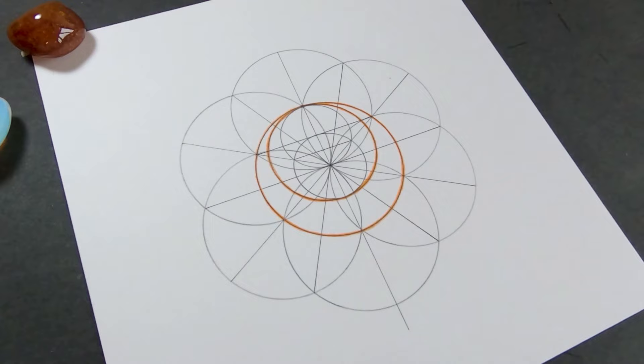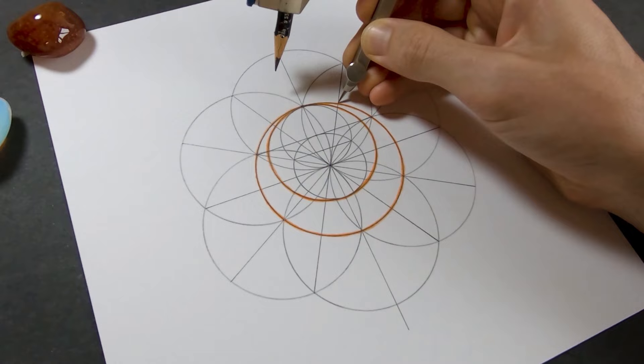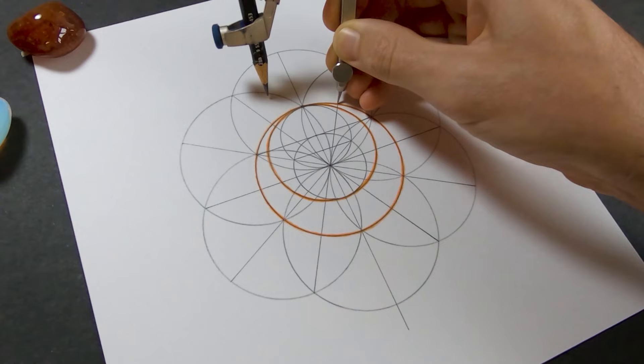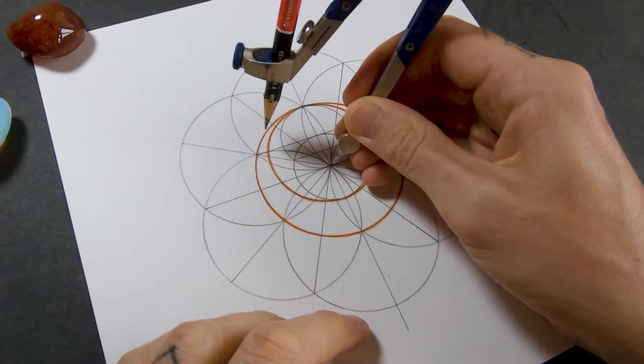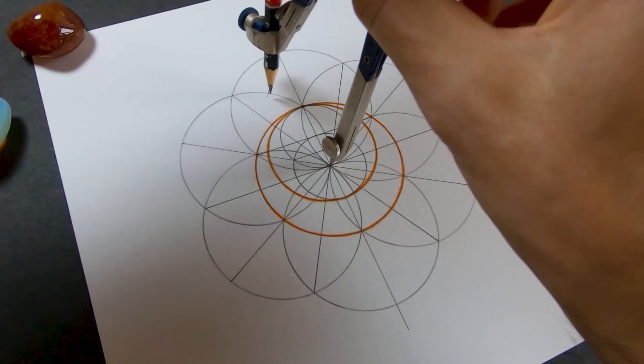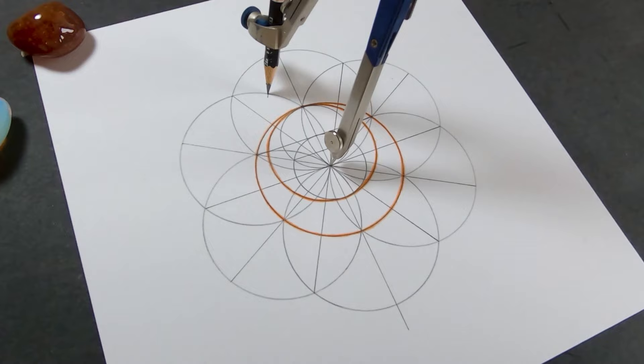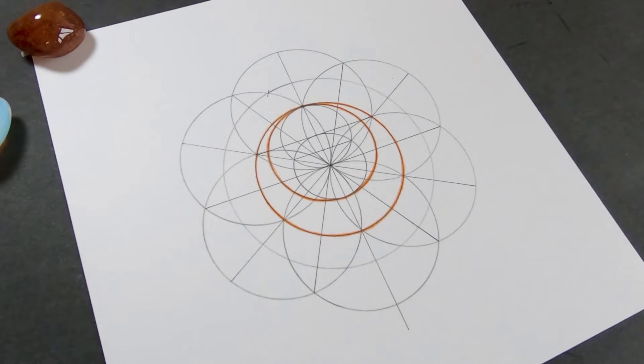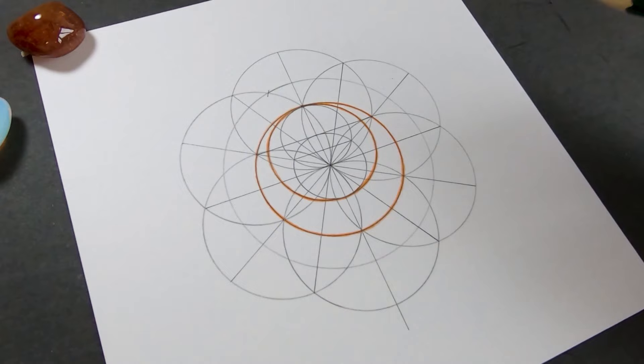I've still got my compass set to the size of the seed of life circles. And I'm going to put it on this line here and just put a little mark on this circle to the left. Right there. And then this is going to help us draw the petals. That'll be the halfway mark of the petals. And I'll set my compass from the center point to that little mark that I just made and draw a circle around. So now that crosses the circles of the seed of life, and that's the halfway point for each petal.